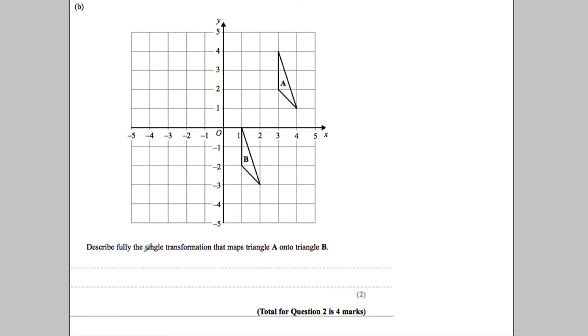Next question. It says, describe fully the transformation that maps A onto B. So how do we get from A to B? Now, because the shape is the same way up, it hasn't been rotated, reflected or enlarged. It's clearly a translation.